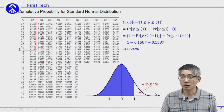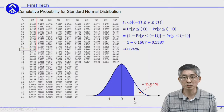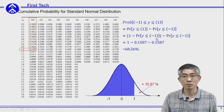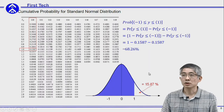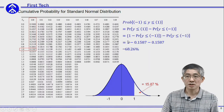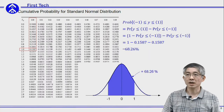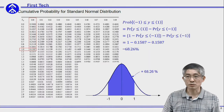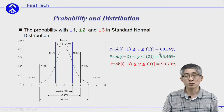You can use this property to calculate the probability for y smaller than 1, which is 1 minus the cumulative probability for y smaller than minus 1. Substituting the numbers, you can get the probability within 1 and minus 1. Between 1 and minus 1 it will be 68.26%.